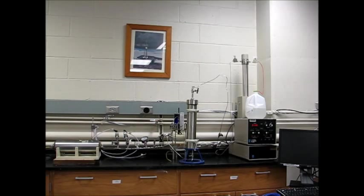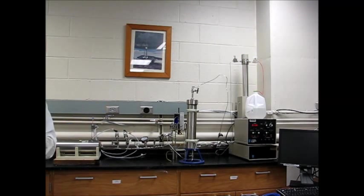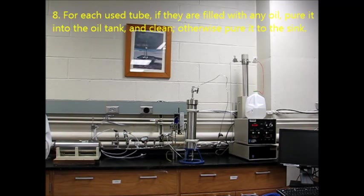After number 7, after the liquid is stratified, which you can observe, the water is at the bottom of the test tube and the oil is at the top. So, calculate Fw, you may need to change the tube more frequently, even if they are full. So when Fw is higher than 99 percent, stop the experiment by pressing stop on the pump for each used tube. If they are filled with any oil, pour it back in the oil tank and clean it.